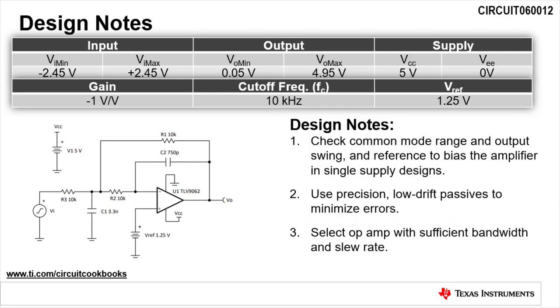When designing active filter circuits, there are a few design notes to be aware of. First, select an op amp with sufficient common mode and output swing range, and add a reference to bias the amplifier in single-supply design.